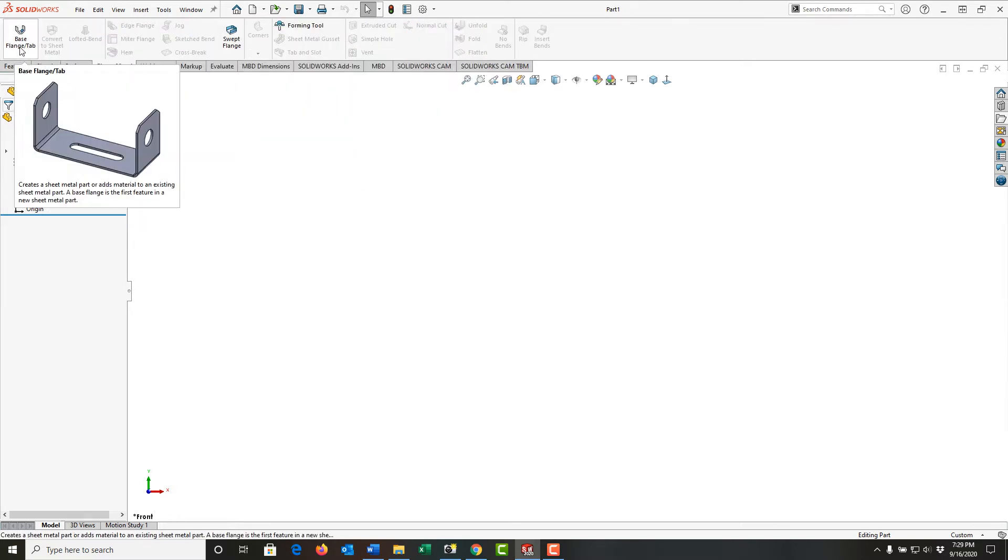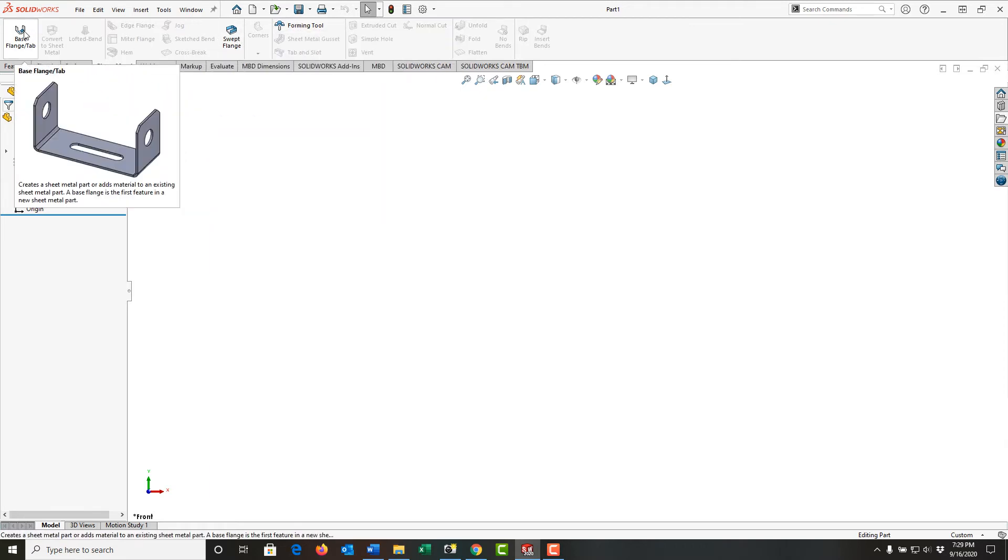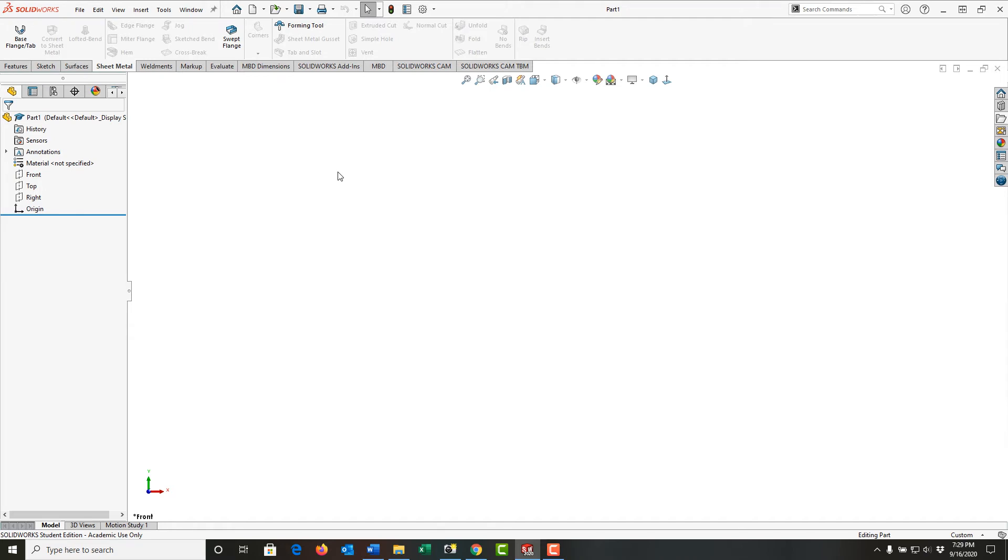And just like a feature, only those things we can start with will be not grayed out. Now that we've added the sheet metal tab, we're going to start creating some simple sheet metal parts.